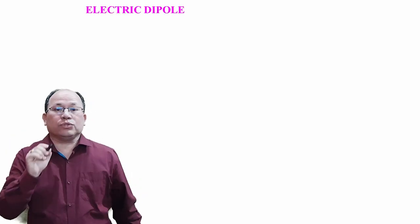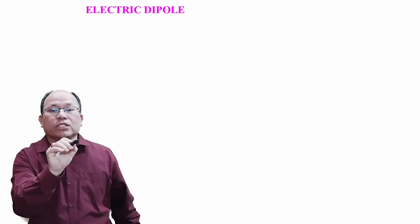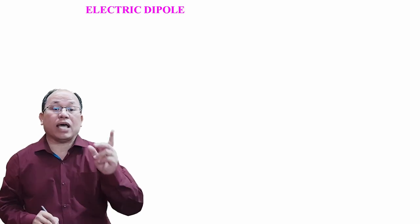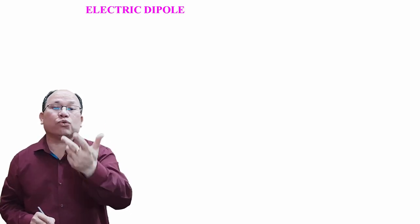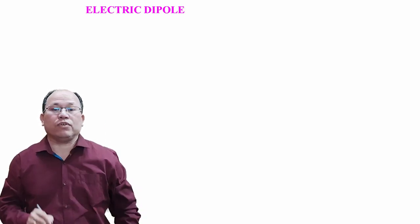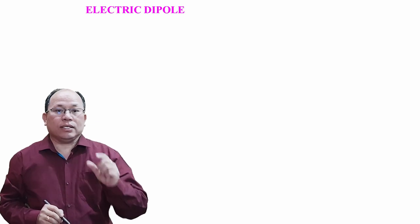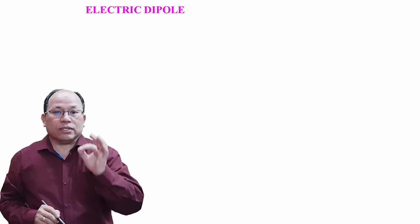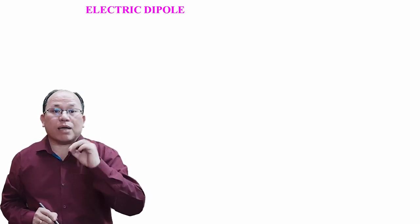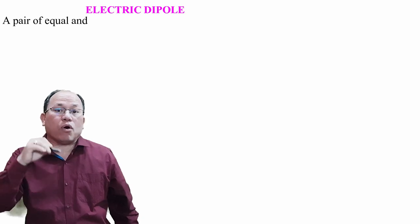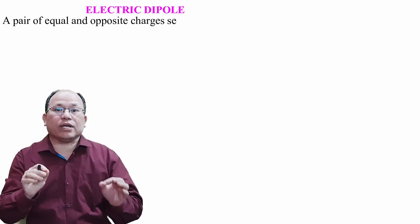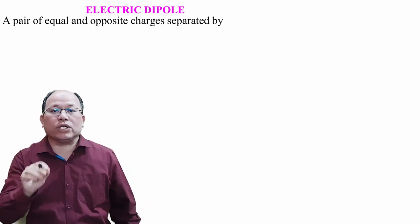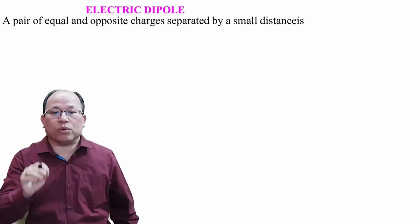Let us come to the next topic: electric dipole. Di means two, pole means two poles of different charges. So an electric dipole is a pair of equal and opposite charges separated by a small distance.